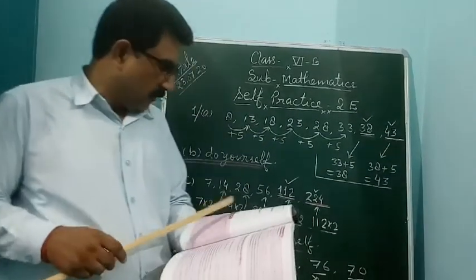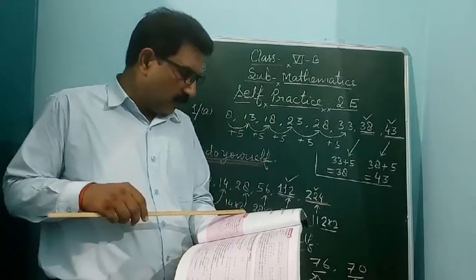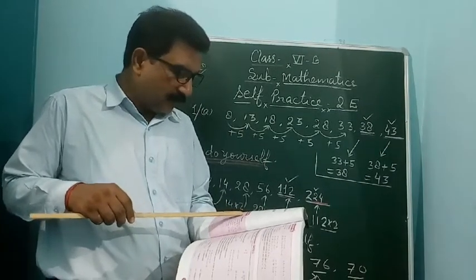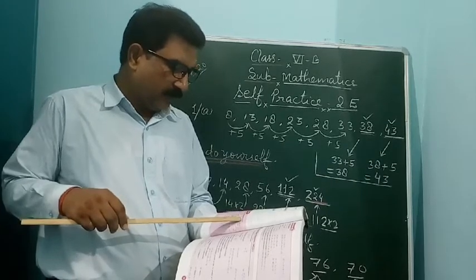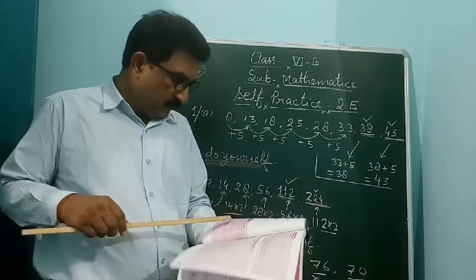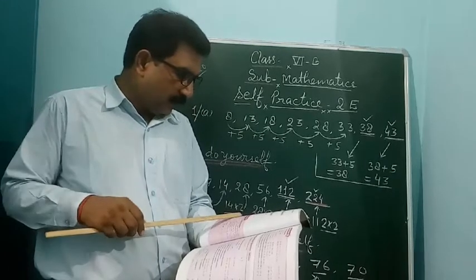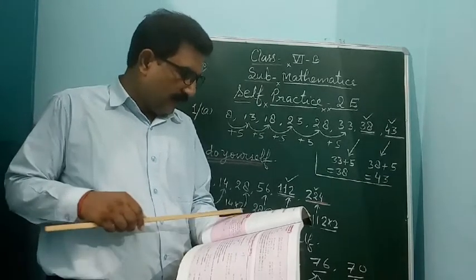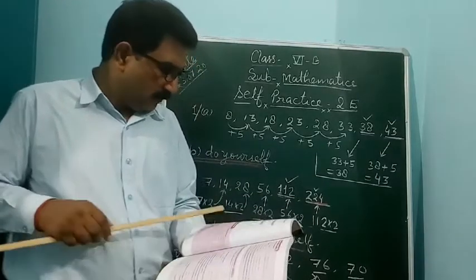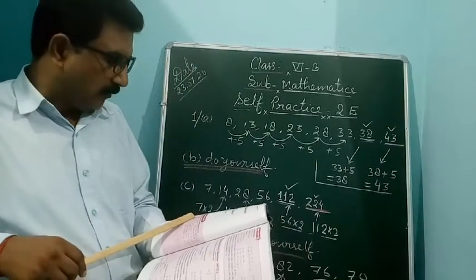Question number 1: For each pattern, find the rule that follows the pattern and the next two numbers in the pattern. From question A to Q, you should find out and fill in the blanks with the next two numbers, and also follow the rules and regulations of the number patterns.